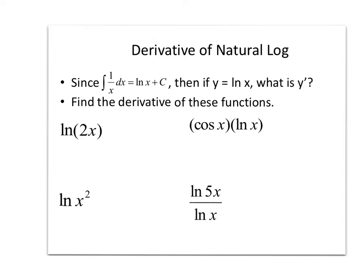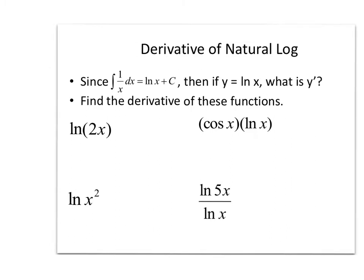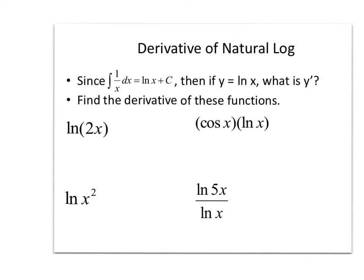Okay, so since the antiderivative of 1 over x turns out to be the natural log of x plus c, if we reverse that, then if we take y equals natural log of x, then y prime would be equal to 1 over x.